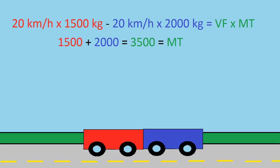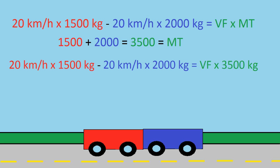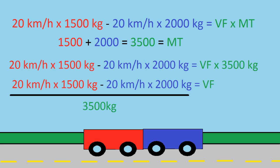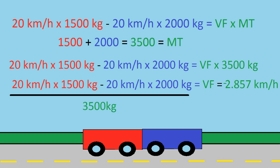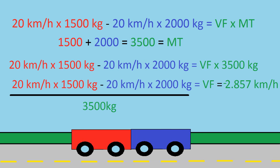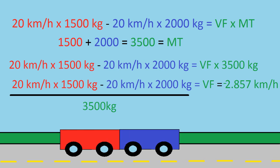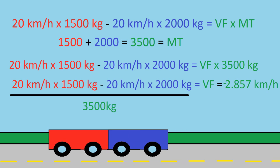So in order to solve this, we have to find the mass total. We take the 1,500 kilograms plus the 2,000 kilograms, and this equals 3,500 kilograms for mass total. Then we plug in the 3,500 kilograms where the mass total was, and divide both sides of the equation by 3,500 kilograms. We get negative 2.857 kilometers an hour for the velocity after the crash.